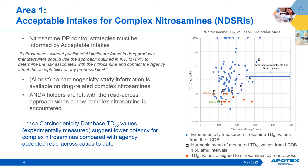This brings us to the first area that urgently needs further research and policy development, namely establishing a non-ad hoc process for acceptable intakes for complex nitrosamines. Drug product nitrosamine control strategies necessarily must be informed by quantitative acceptable intake limits. The italicized text here is quoted from the Control of Nitrosamines Impurities in Human Drugs FDA Guidance: if nitrosamines without published AI limits are found in drug products, manufacturers should use the approach outlined in ICH M7 to determine the risk associated with nitrosamine and contact the agency about the acceptability of any proposed limit.